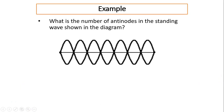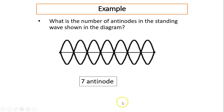Example: What is the number of antinodes in the standing wave shown in the diagram? Remember, antinodes are either up or down. Counting only the upward peaks: one, two, three, four, five, six, seven — so there are seven antinodes. The number of nodes would be eight.